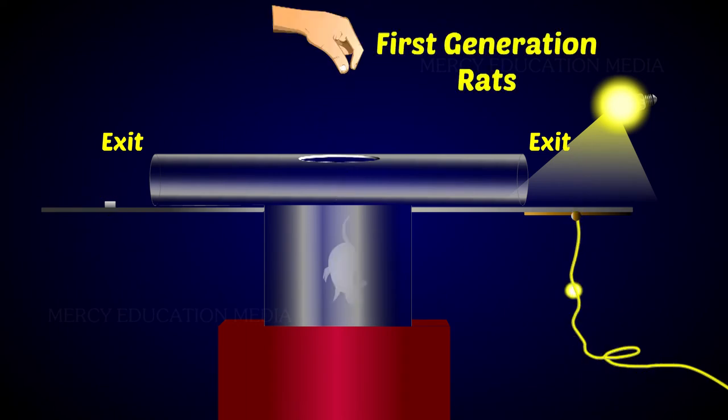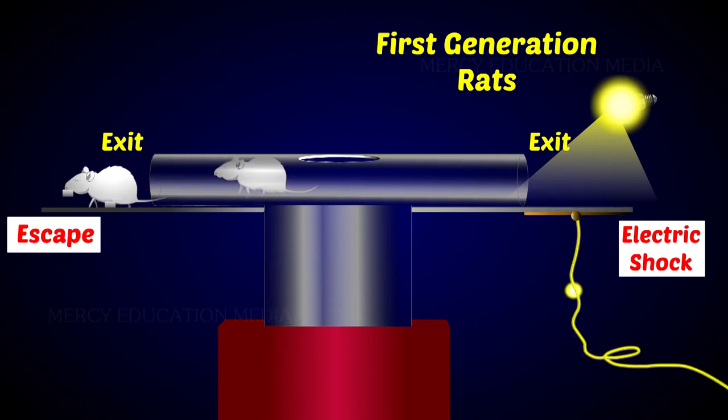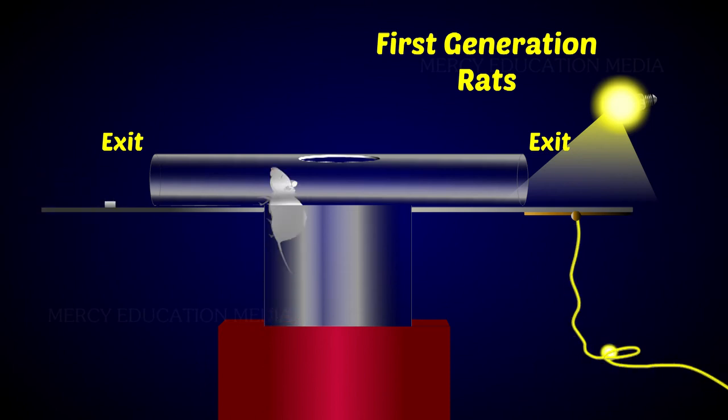McDougall dropped several rats into the tank. Many of the rats preferred lighted pathway to escape and at the exit, they received the electric shock. Those rats that preferred dark way received the cheese. He repeated the trial several times. Gradually, many rats learned the correct route for escape.